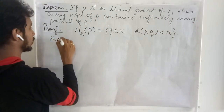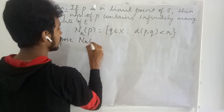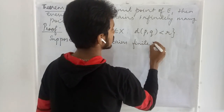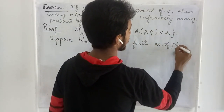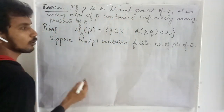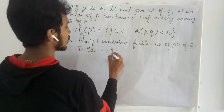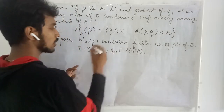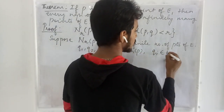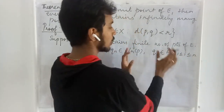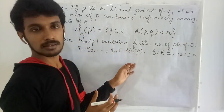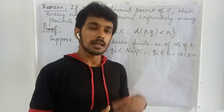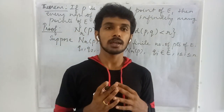In order to prove this, we proceed by contradiction. Suppose the neighborhood N_r of P contains a finite number of points of E. Let me name them q1, q2, ..., qn, which are members of N_r of P and are also members of E. These members of E are present inside this neighborhood, and we need to prove there are infinitely many — so we assume only finitely many, which means we are going in a contrapositive approach.